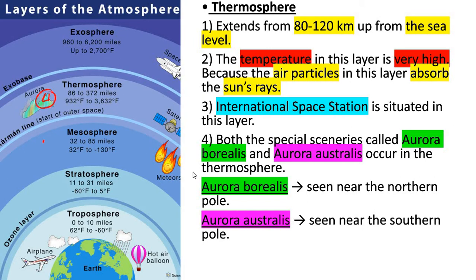The fourth layer is the thermosphere, which is quite fascinating. It extends from 80 to 120 kilometers up from the sea level. Here the temperature is very high because air particles in this layer absorb the sun's rays. In this layer we can see things like satellites and the International Space Station. A beautiful thing about this layer is we can see certain phenomena called auroras.